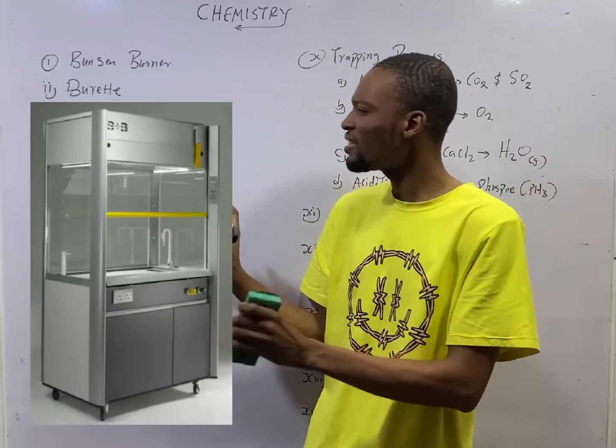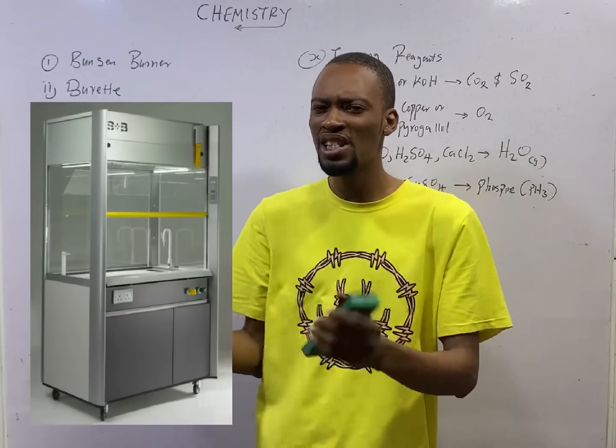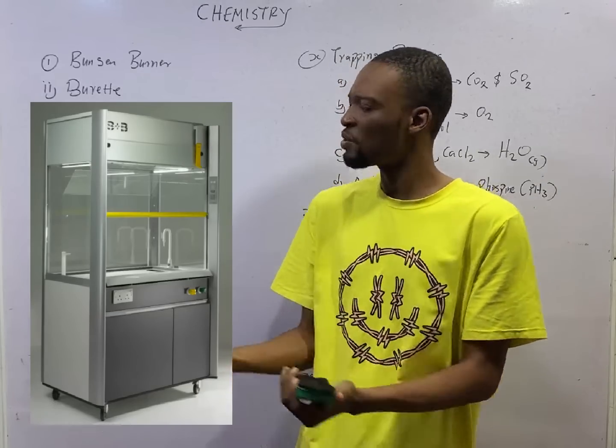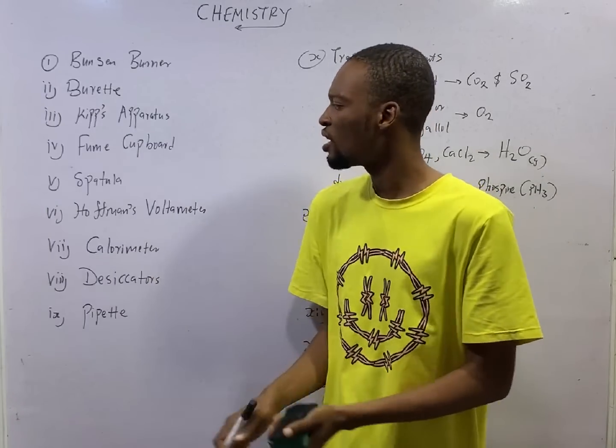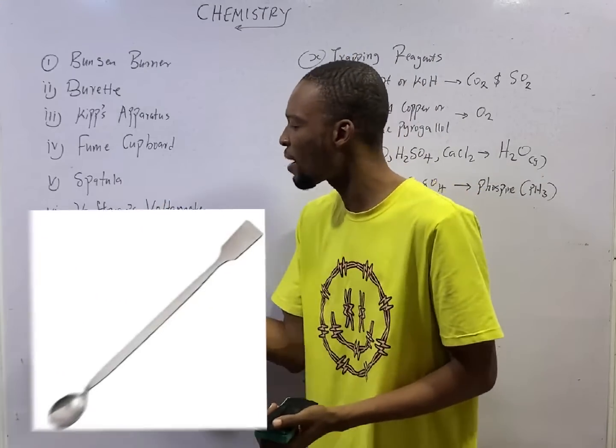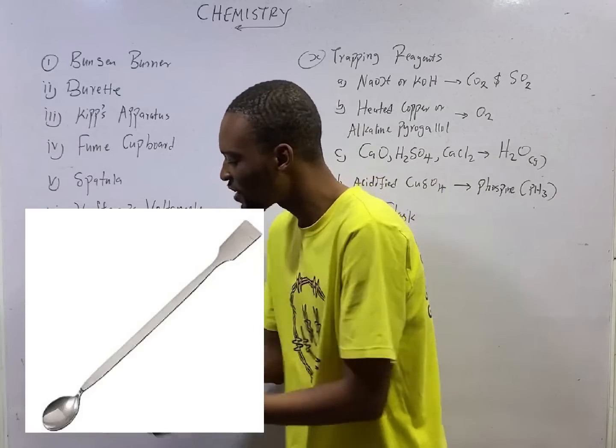Fume cupboard is the chamber for producing poisonous gases in the lab. So to produce poisonous gases in the lab, we use the fume cupboard. Meanwhile, spatula is used for carrying small amounts of solids from one point to another.